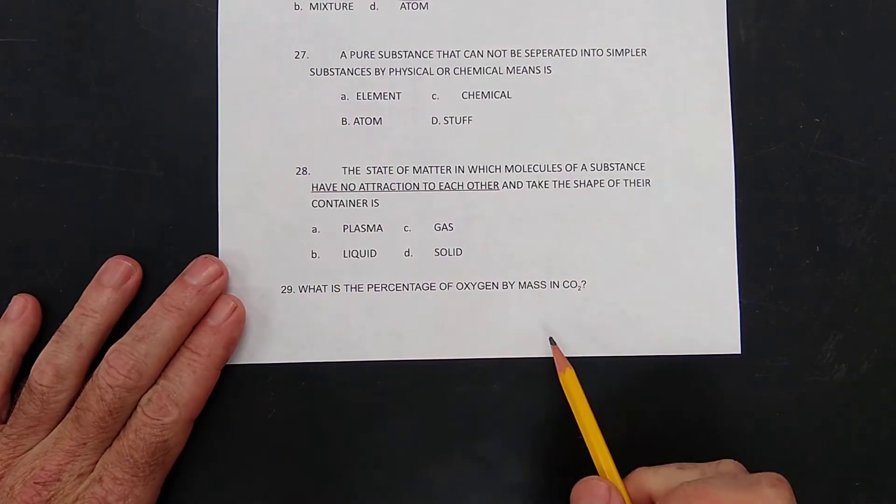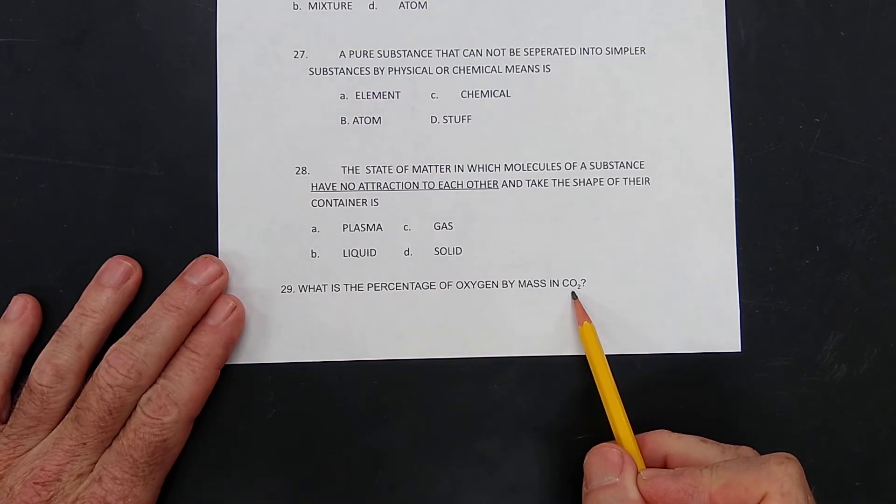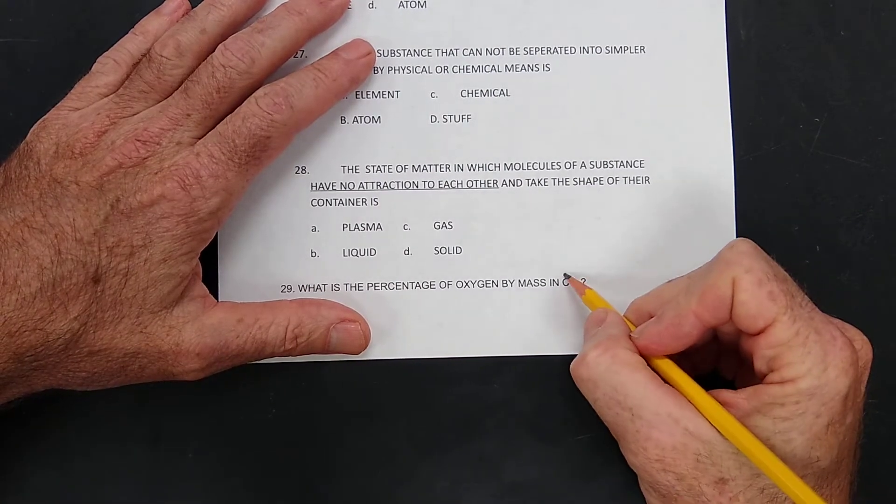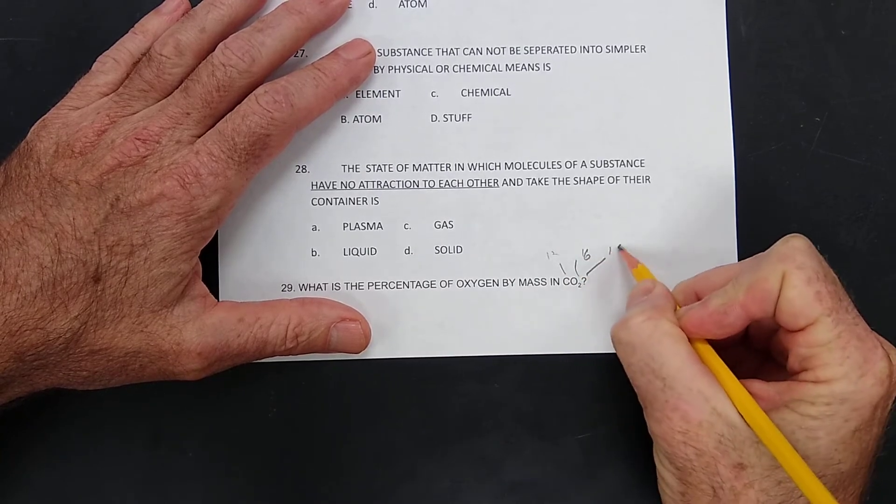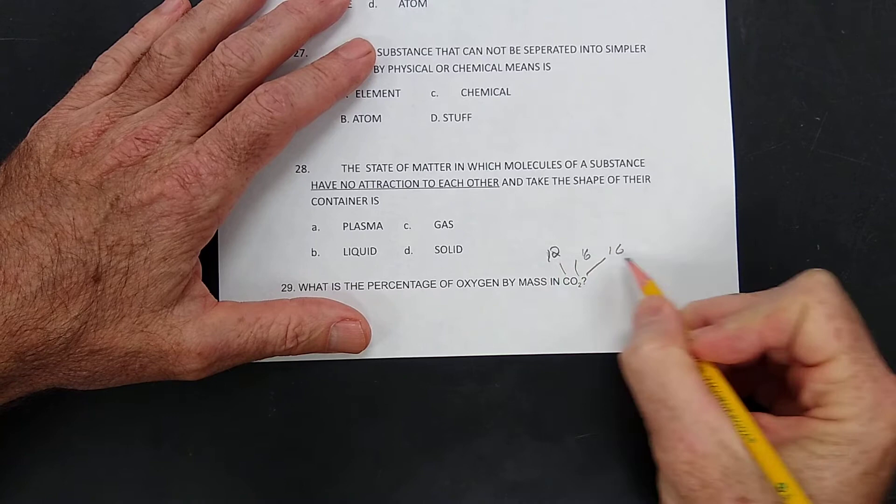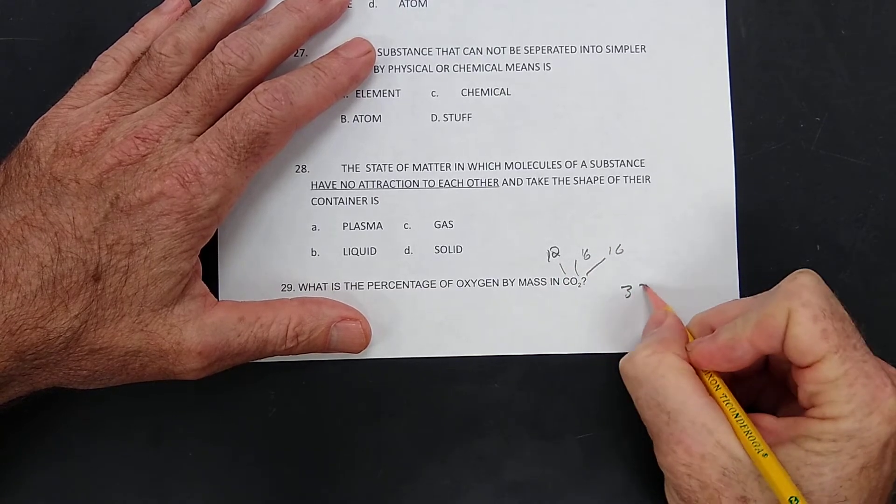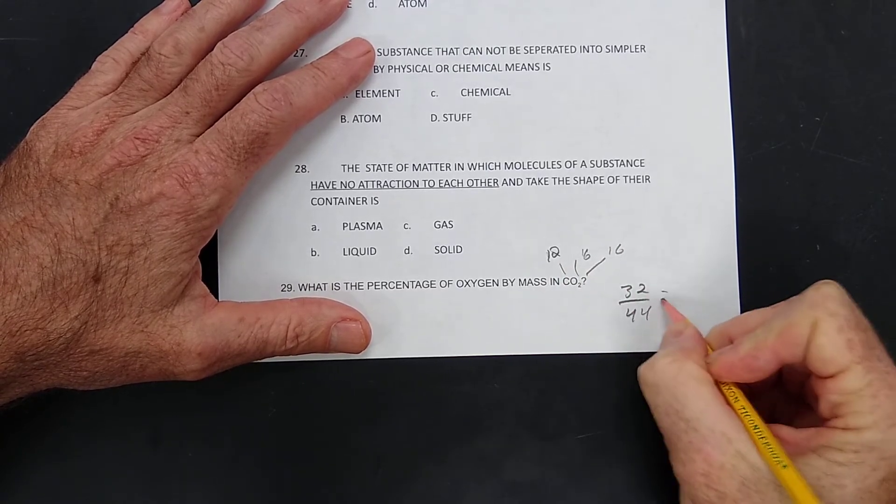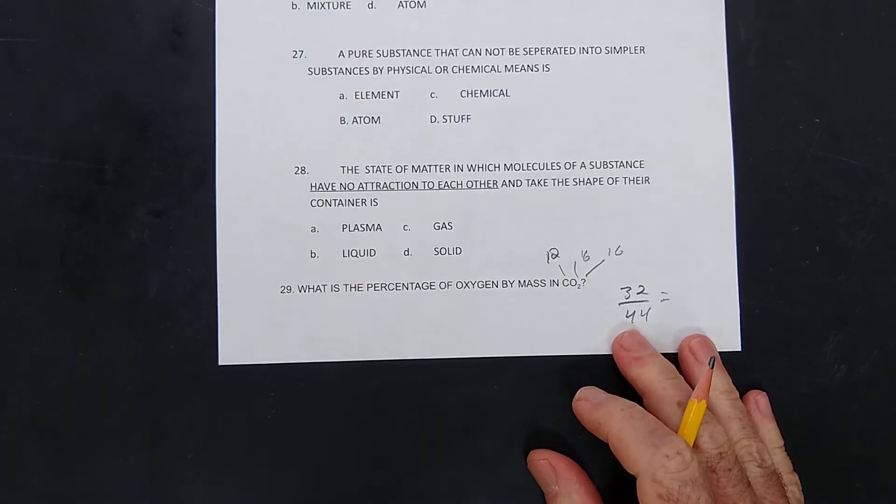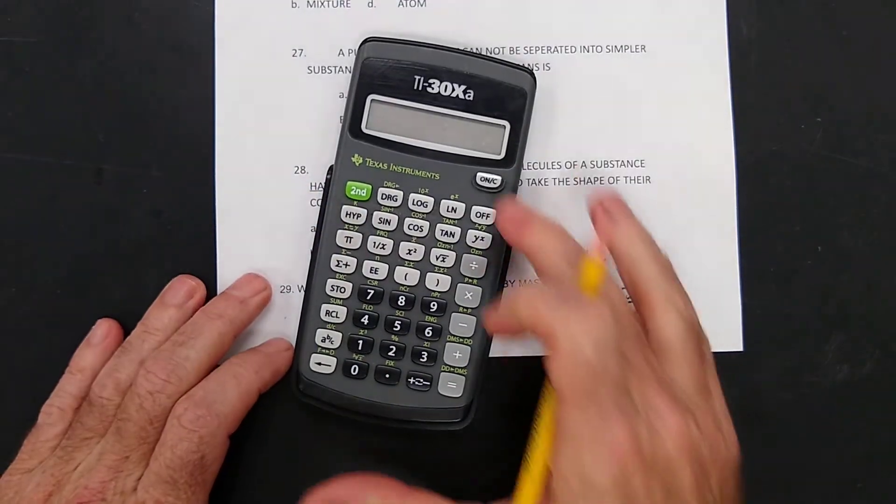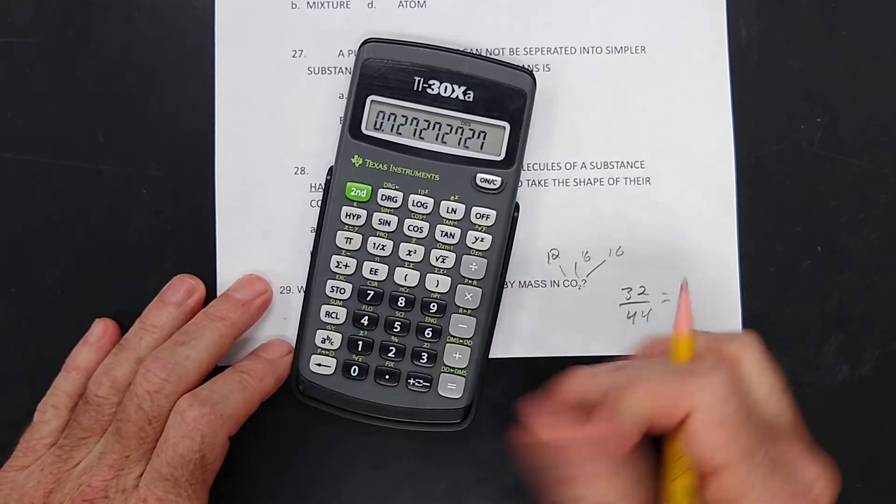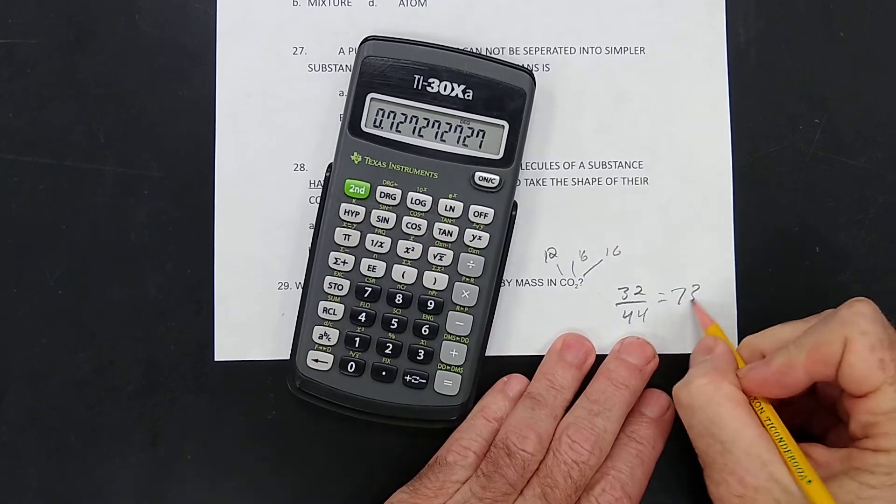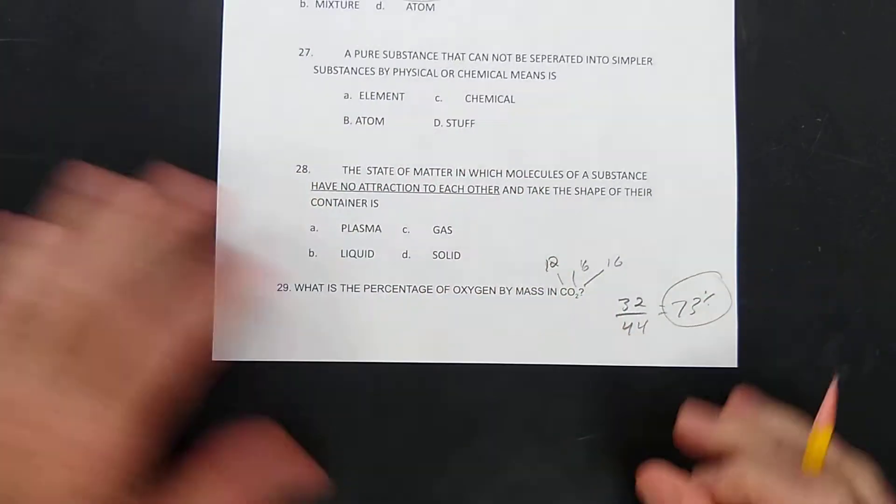What's the percentage of oxygen by mass in carbon dioxide? Well, you have 12, 16, and 16. 12, 16, and 16, so 32 out of the 44 is oxygen. So you could do the math on that, but I'll do it for you. 32 divided by the law of multiple proportions. It's like 73% oxygen.